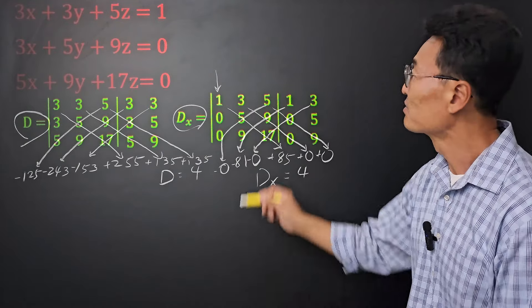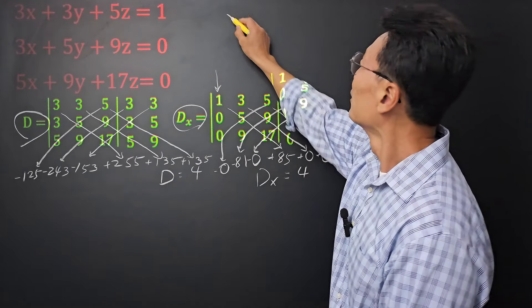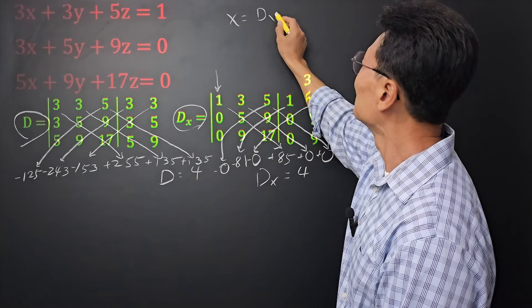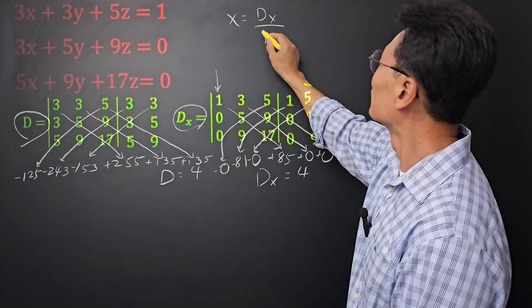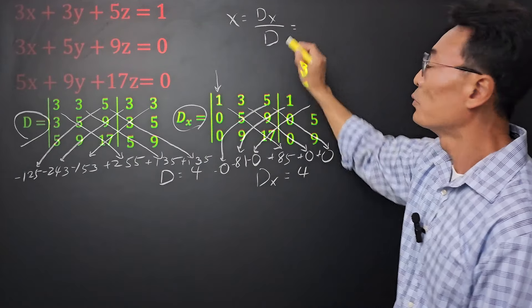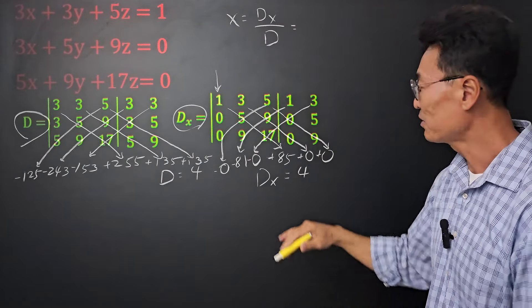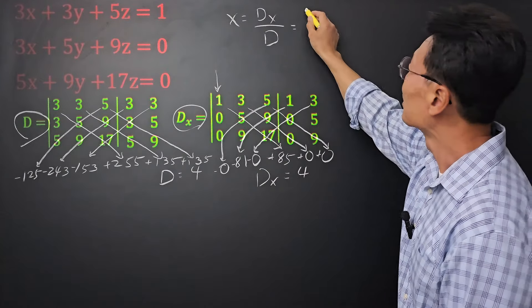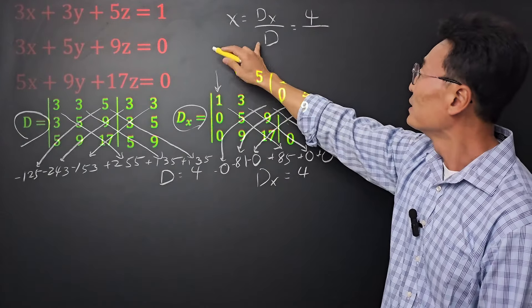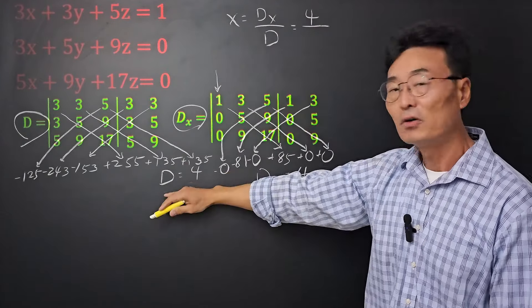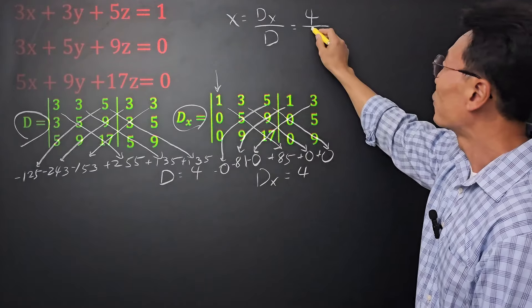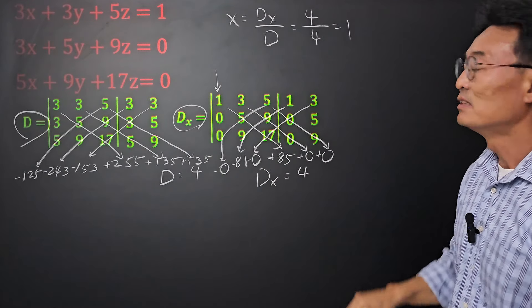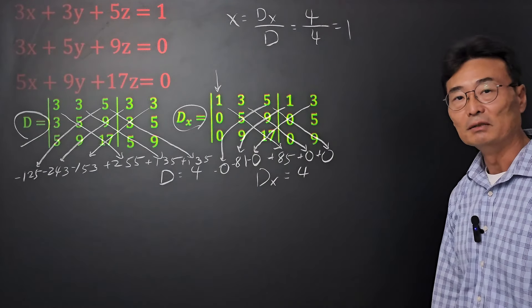To find x, all we have to do is dx over d. dx we found is 4, and d is also 4, so the value of x is 1.